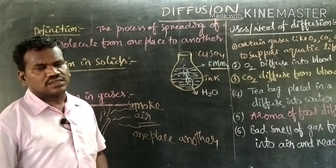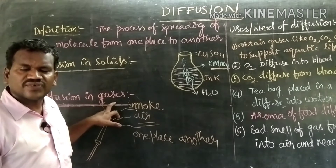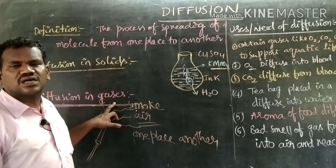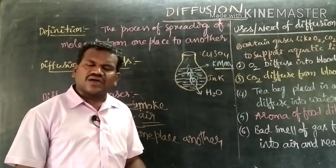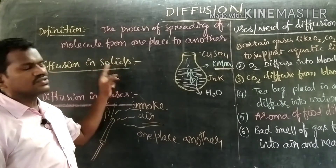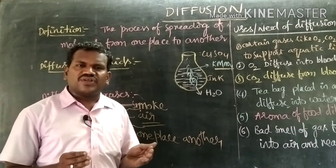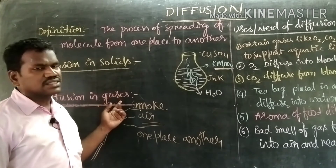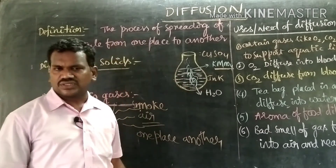We should remember: the rate of diffusion of gases is greater than the rate of diffusion of liquids, and the rate of diffusion of liquids is greater than the rate of diffusion of solids. That means the process of diffusion is very high in the case of gases, next in the case of liquids, and then in the case of solids.